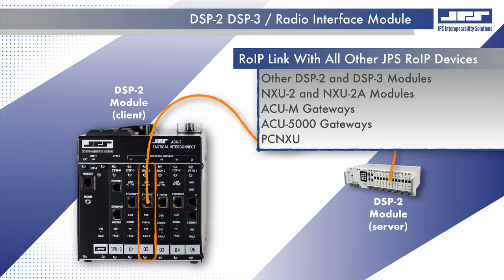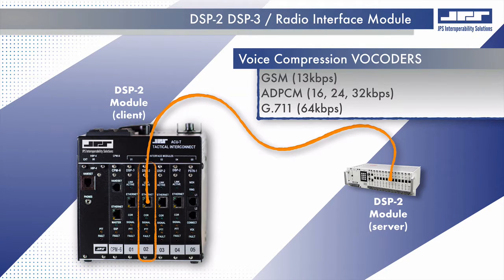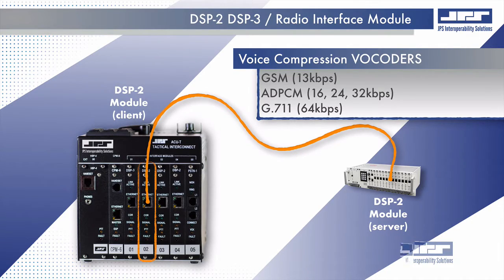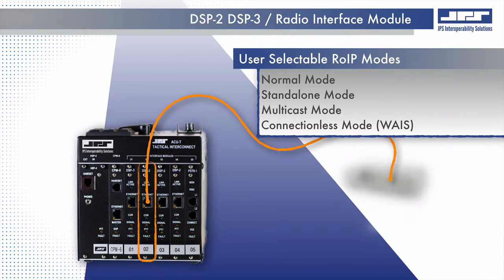Five user-selectable voice compression vocoders allow the conservation of network bandwidth while yielding high-quality audio fidelity, whether the ROIP stream contains either pure voice communications or in-band signaling tones. User-selectable ROIP modes allow for simple integration into complex architectures such as JPS wide-area interoperability systems, also known as WAIS.